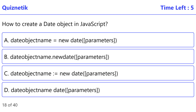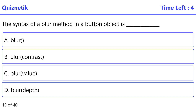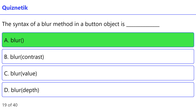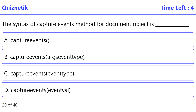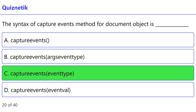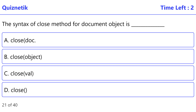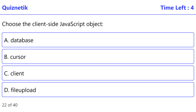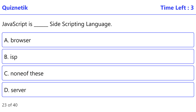JavaScript is interpreted by: correct option is A: the client. How to create a date object in JavaScript? Correct option is A: object name equals new Date(parameters). The syntax of a blur method in a button object is: correct option is A: blur(). The syntax of the captureEvents method for a document object is: correct option is C: captureEvents(eventType). The syntax of the close method for a document object is: correct option is D: close().